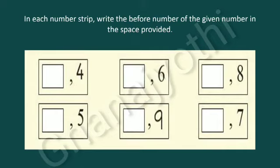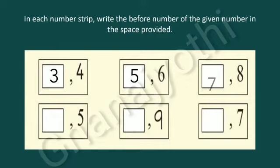Now we have to write the before number. Look at the first strip — there is a 4, so the before number for 4 is 3. In the second strip, there is a number 6; before number for 6 is 5. In the third strip, there is a number 8; before number for 8 is 7. In the fourth strip, there is a number 5; before number for 5 is 4. In the fifth strip, the number is 9; before number for 9 is 8. In the sixth strip, there is a number 7; before number for 7 is 6.